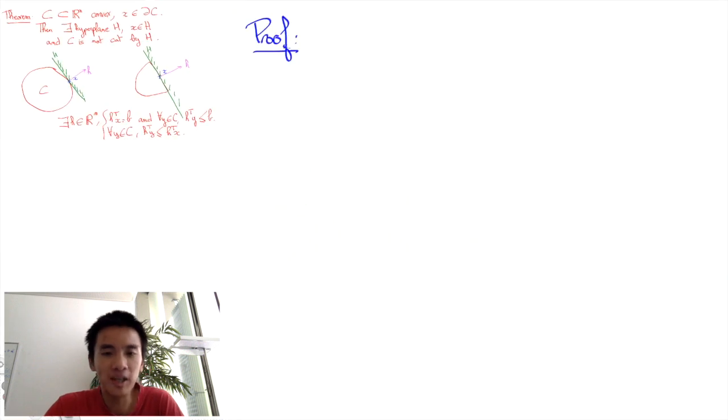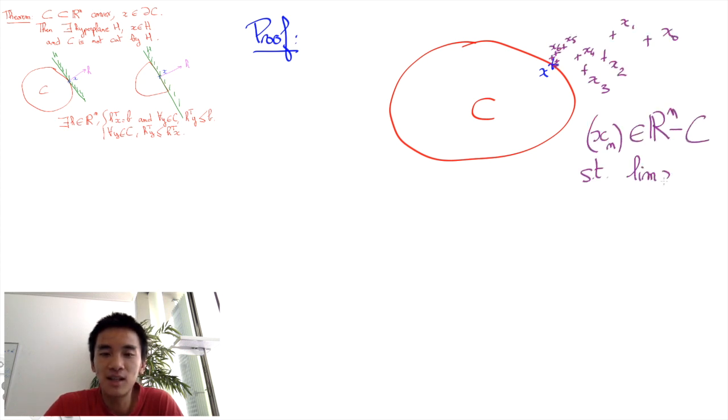Let's prove the theorem. The key idea is that if x is on the boundary, then it is possible to find a sequence xn outside of C such that the limit of xn is equal to x. And because the xn are outside of C, it will be possible to separate them from the convex set C using the projection theorem. Let's formalize this intuition.